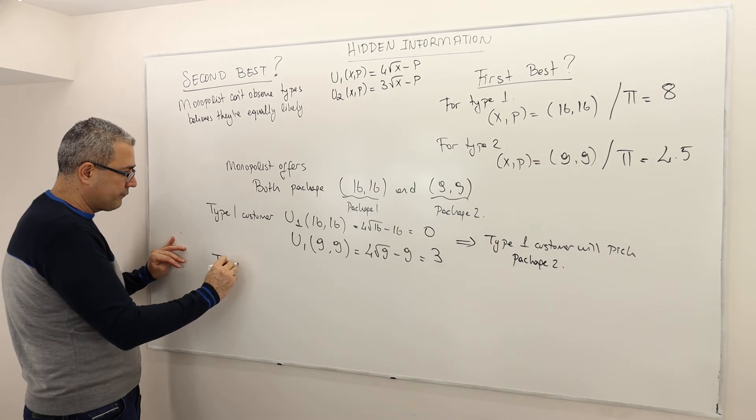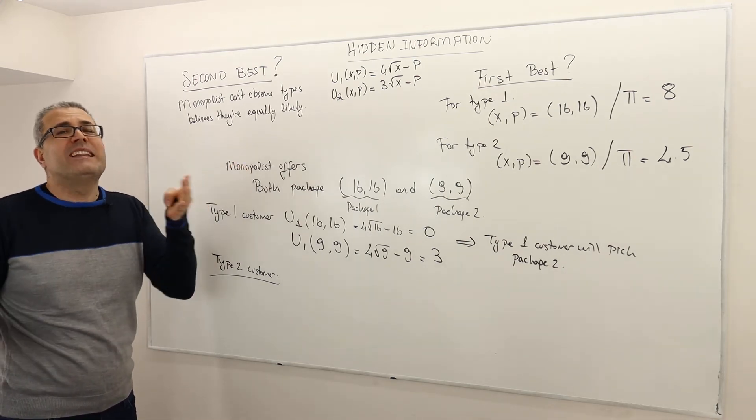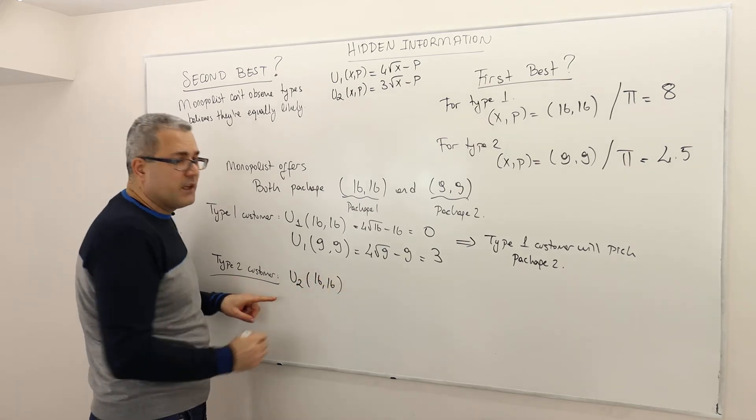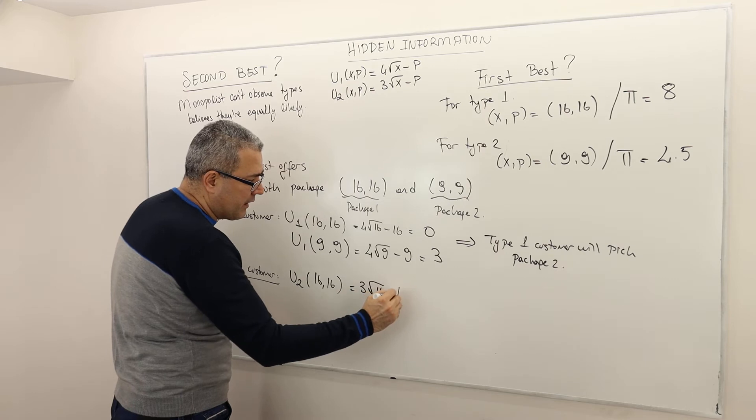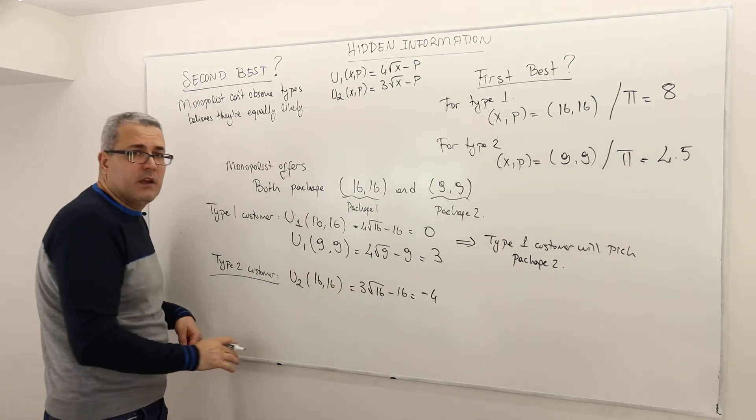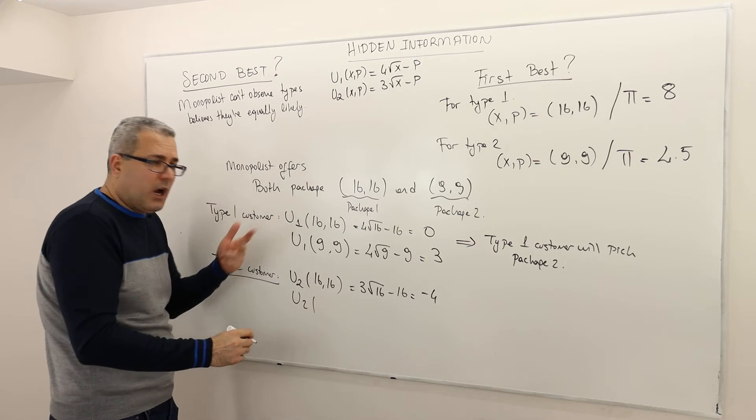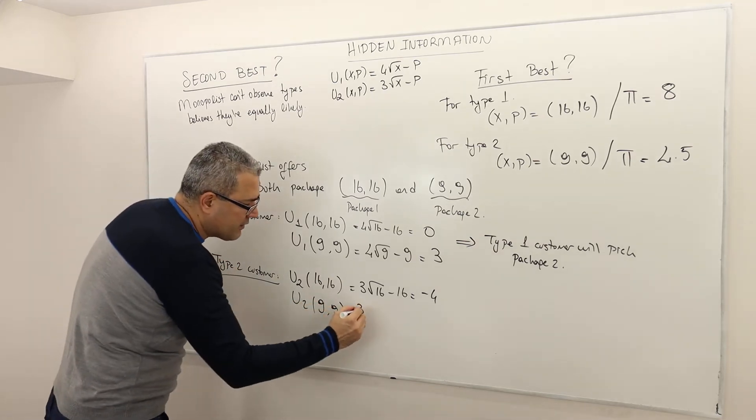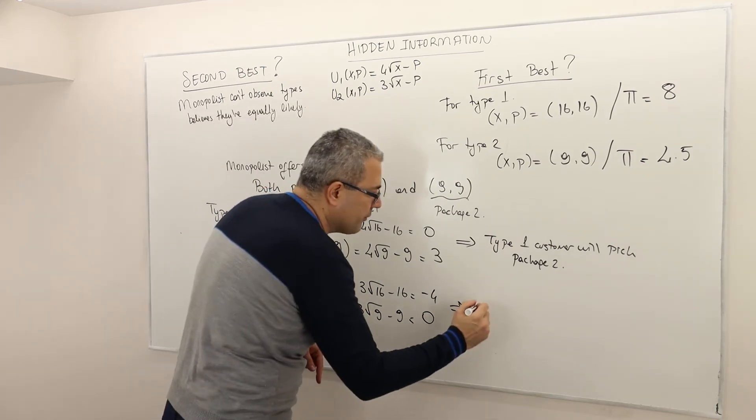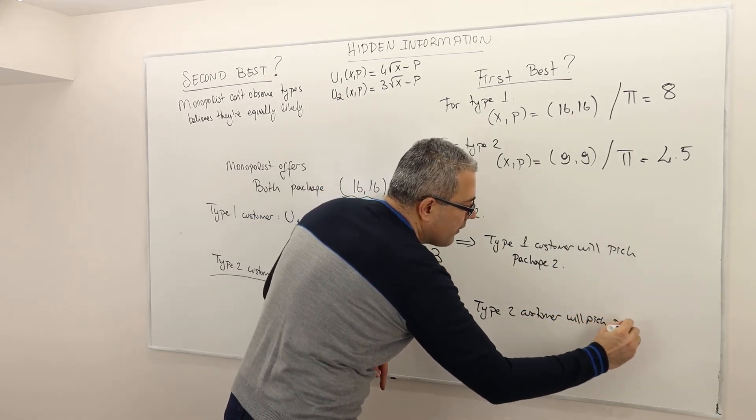What about type two customer? Again, don't forget there aren't two customers. There's one customer, but two different types. So type two, if the customer is type two, his utility, if he consumes the pack of 16 is going to be 3√16 - 16. So this is 12 - 16, minus four. It's negative utility. So he's not going to buy pack one. He prefers not to buy anything, because not to buy anything has zero utility higher than minus four. But there's another option, pack of nine and pay $9. So what's going to be his utility? His utility is going to be zero. So therefore type two customer will certainly pick package two.